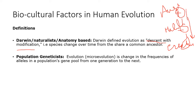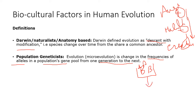Population geneticists define evolution in terms of change in frequencies of alleles in a population's gene pool from one generation to the next. For example, if a population has both A and B blood group alleles, but in the next generation the A allele is lost and only B remains, that population has undergone evolution in terms of blood group composition.